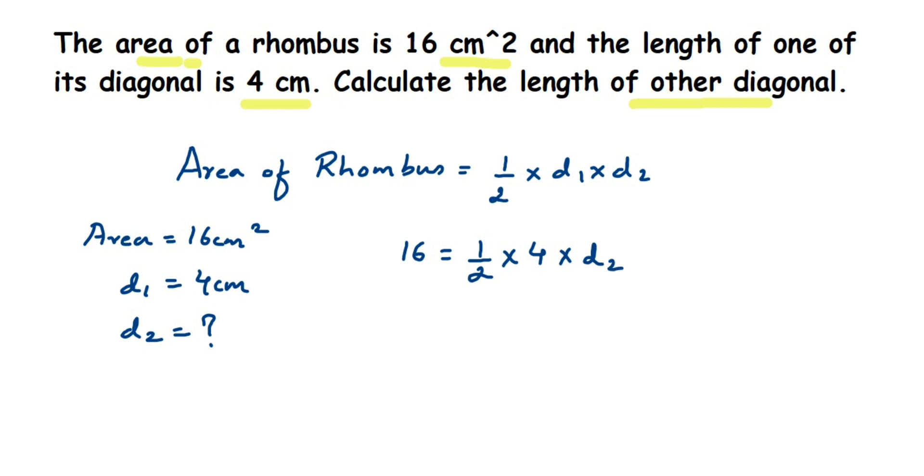Now we have to solve this. So I'm going to cancel two and four. Two once, and then two twos are four. So here we got 16 is equal to two into d2.